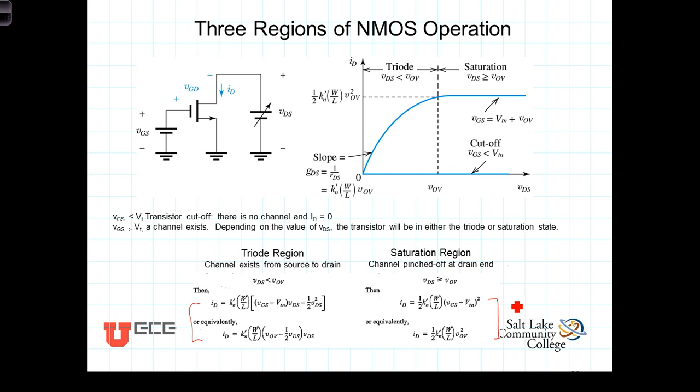We've seen that that's a first order approximation, and that in reality as VDS increases beyond the overdrive voltage, there is a phenomenon known as channel length modulation that occurs. Under those circumstances, each of these two equations is modified by a term equal to 1 plus lambda times VDS.